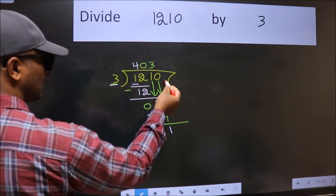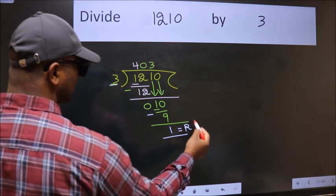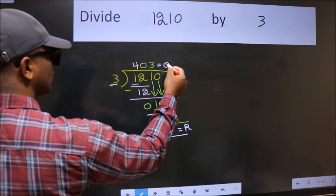No more numbers to bring it down, so we stop here. This is our remainder and this is our quotient.